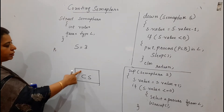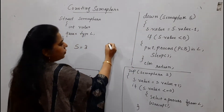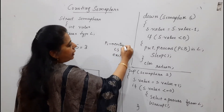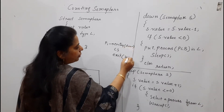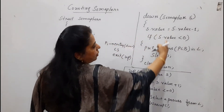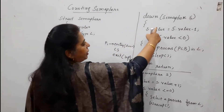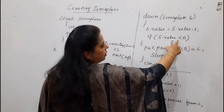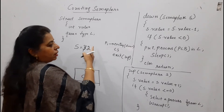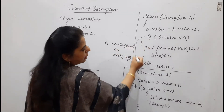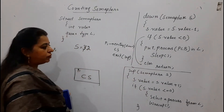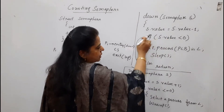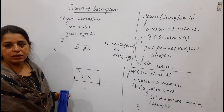Process P1 wants to enter into the critical section. The initial value for the semaphore is 3. P1 will perform the entry code — that is the down operation. The down operation decrements the value: S.value minus 1, so it becomes 2. Check the condition: is 2 less than 0? No, 2 is greater than 0, so the condition is false. If the condition is false, the control goes to the else part, meaning process P1 can enter into the critical section.